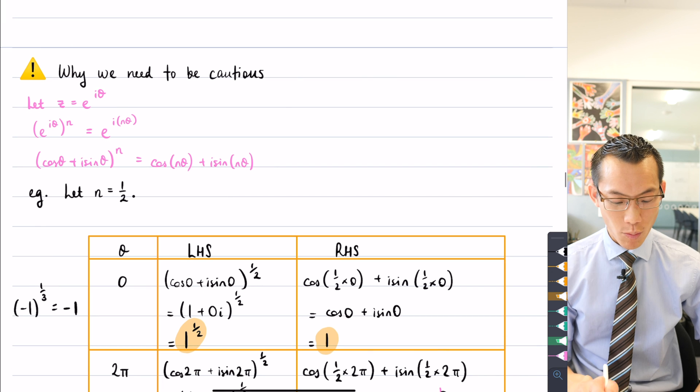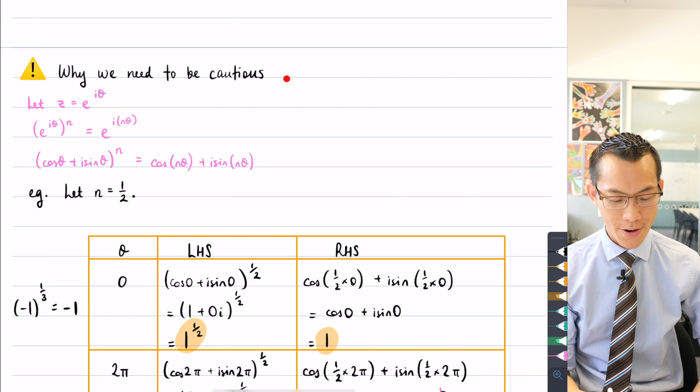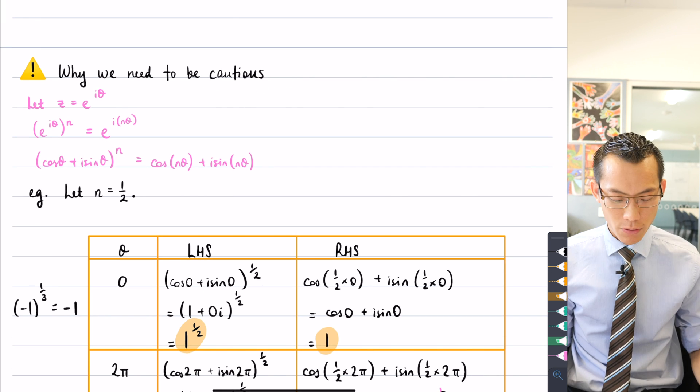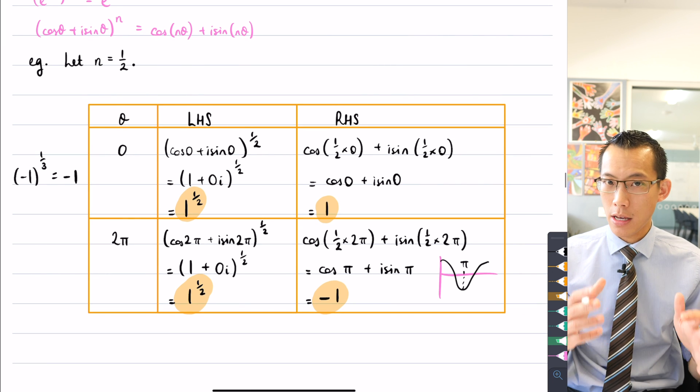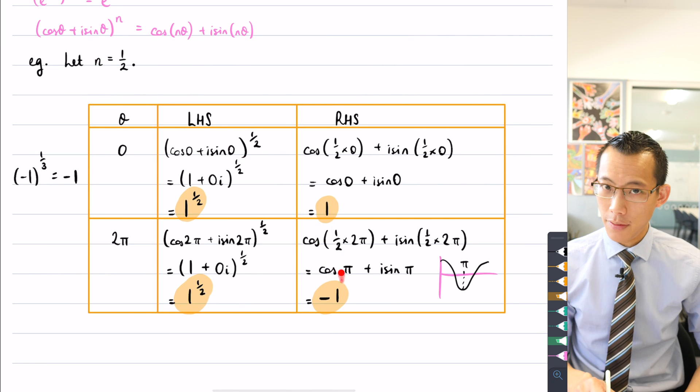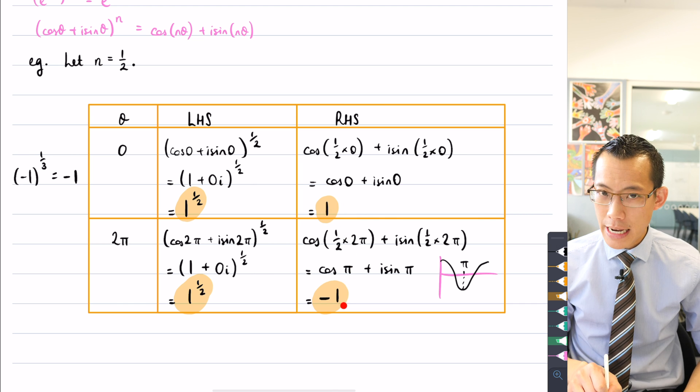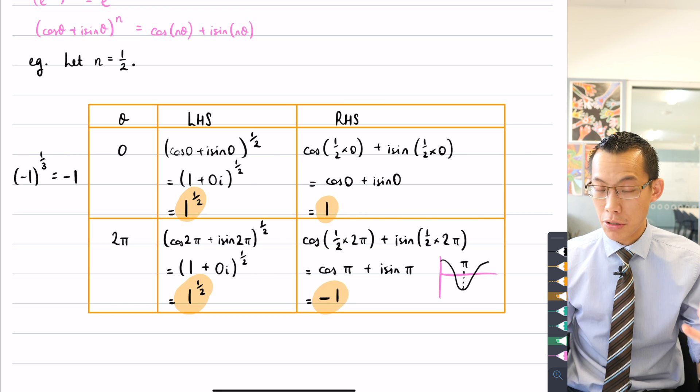Now, I said we were going to look and see why we need to be cautious with de Moivre's theorem. And here is the essential reason that if you pick non-integer values of n, you get this multi-valued thing happening here. You're like, is it one or is it negative one? De Moivre's theorem doesn't distinguish between them.